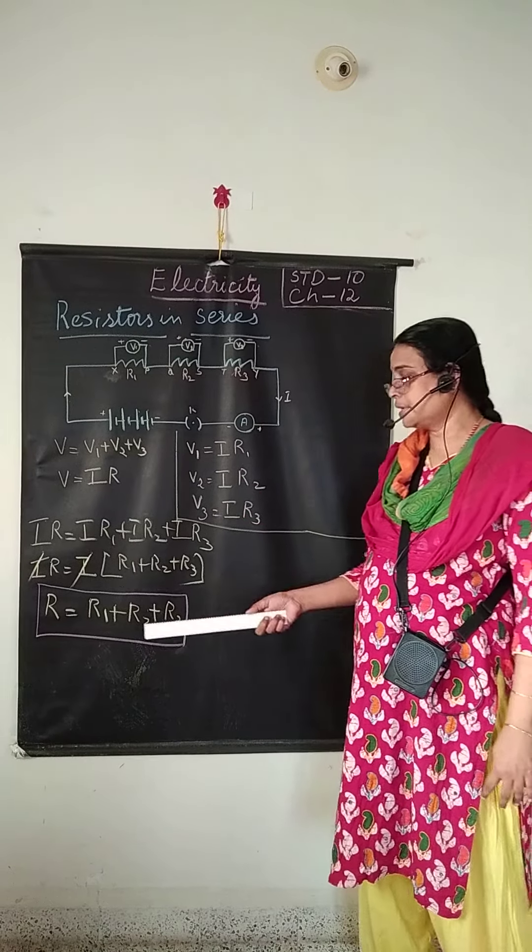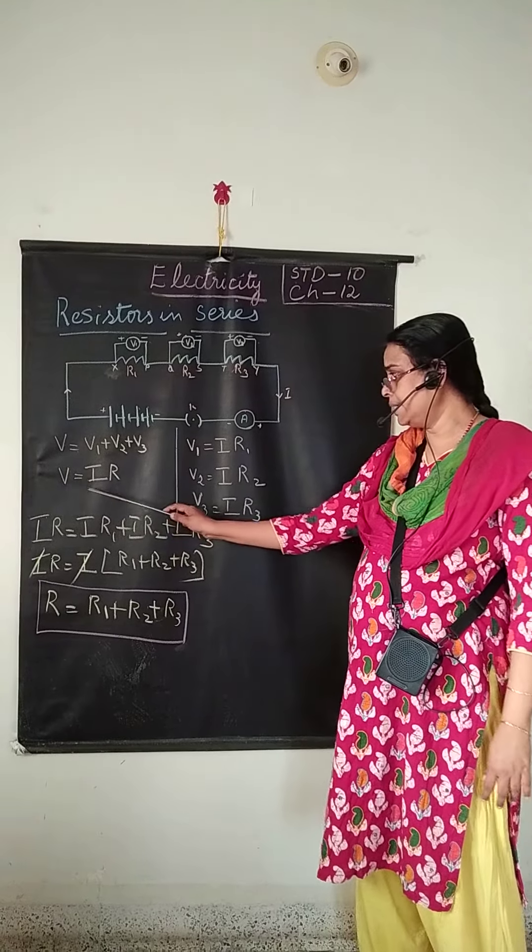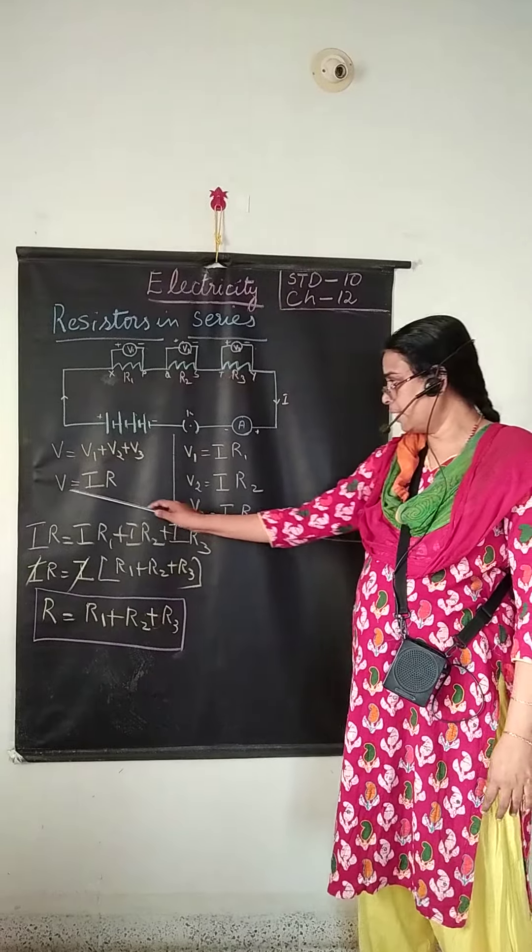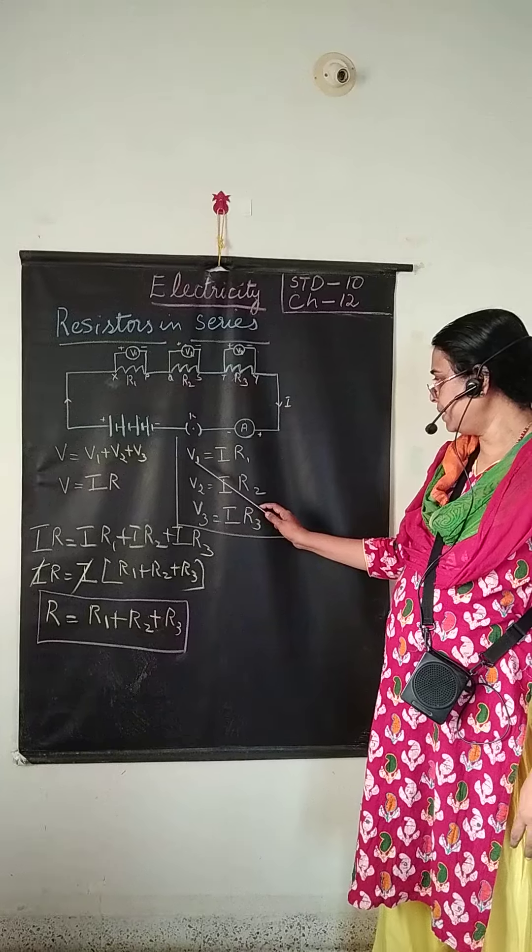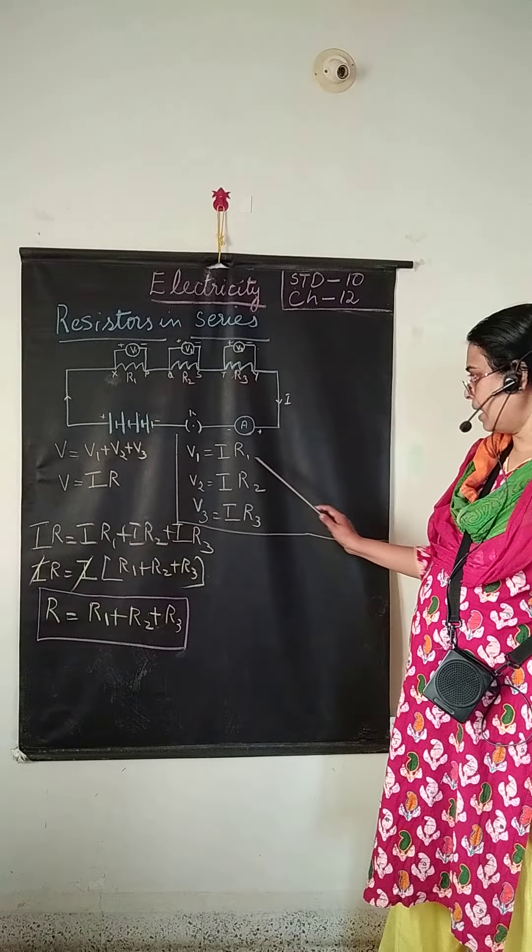Now according to Ohm's law V is equal to I into R. Now V is equal to I into R. So what will be V1? I R1.